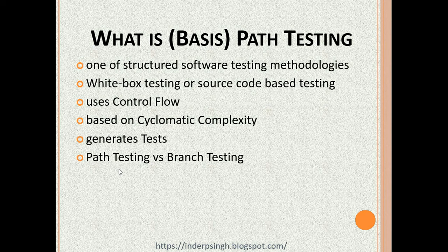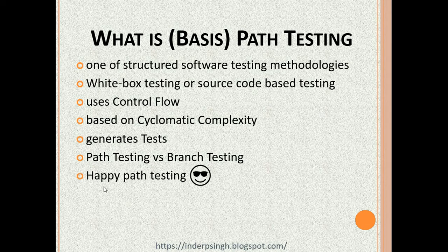Path testing versus branch testing: basis path testing is more thorough than branch testing. Branch testing tests every decision outcome. There is also something called happy path testing. A happy path means a path of execution with no errors, resulting in a positive outcome. For example, if you are making an online bill payment with the correct OTP, that results in a successful transaction — that would be a happy path test.